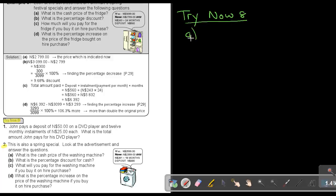Try Now 8. This is also a spring special. Look at the advertisement and answer the questions. What is the cash price of the washing machine? The cash price is $2,399.